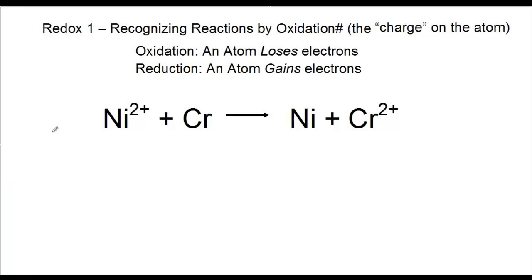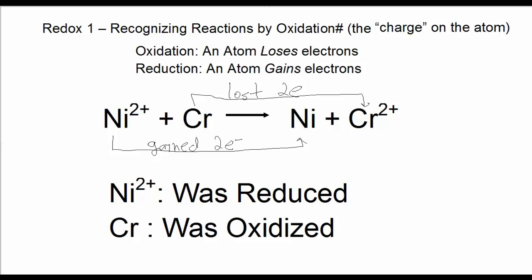In this case, nickel gained two electrons, therefore went through a reduction, or we could say it was reduced. Chromium, on the other hand, lost the two electrons, therefore it was oxidized or went through an oxidation.